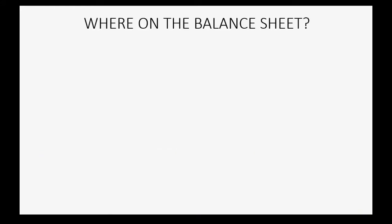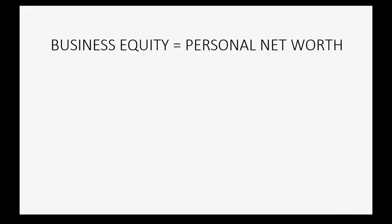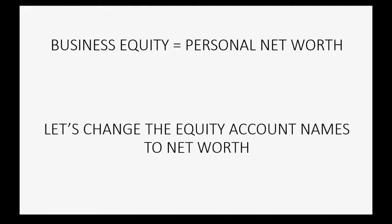Where on the balance sheet would the net worth be? The net worth will show in the owner's equity section of the balance sheet of the person or entity. If this were a business, the equity would represent the ownership claim or ownership rights that the owner has in the business. But for a personal individual balance sheet, the equity of a business is analogous to the idea of personal net worth. So that's why if you're using QuickBooks to find your net worth, it would be in the owner's equity section of the balance sheet.